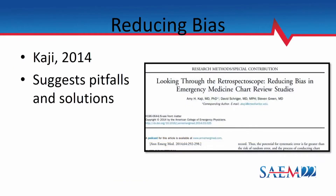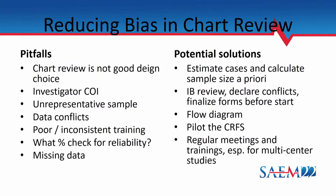The third paper is the Amy Kaji study from 2014, which went back through all 12 elements to look at pitfalls and solutions. Sometimes chart review is simply not a good design choice because you can't get the data you want. Other pitfalls include investigator conflict of interest, samples that don't represent reality, conflicting data, poor and inconsistent training, and issues with missing data.